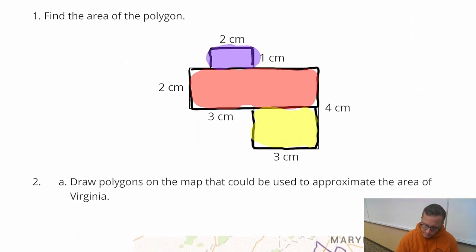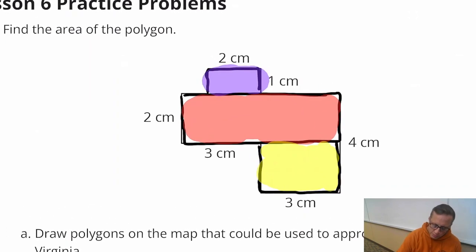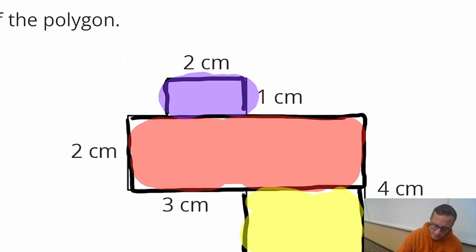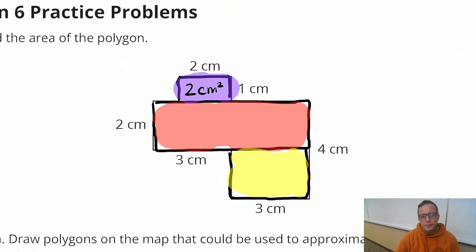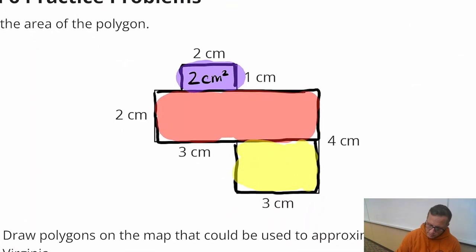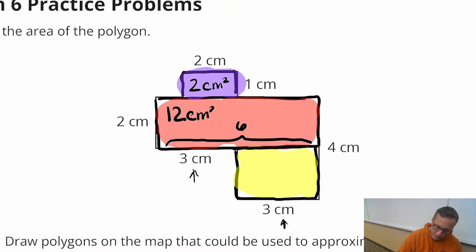All right, so let's do it. Let's figure out the area. So the purple one, the top one there, that's 2 by 1. That means the area of that is going to be 2 square centimeters. And then for the middle one, the red one there, we need to know what this complete length is. This part right here is 3, this part is 3. So 3 plus 3 makes 6. So you got 6 times 2 is 12, so that's 12 square centimeters.